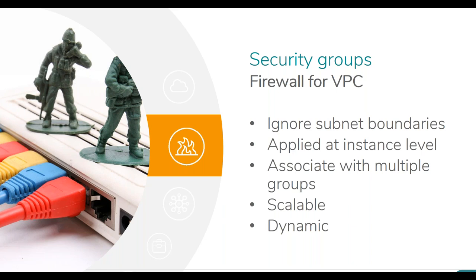Security groups are applied at the instance level, or actually the interface level. For example, you might define a security group for allowing traffic from load balancers into your web servers — you associate that with all your web servers and nothing else. You wouldn't allow traffic from anywhere else or in from the public internet. You might have an additional requirement to SSH or RDP to all your instances from a jump box — a bastion server.